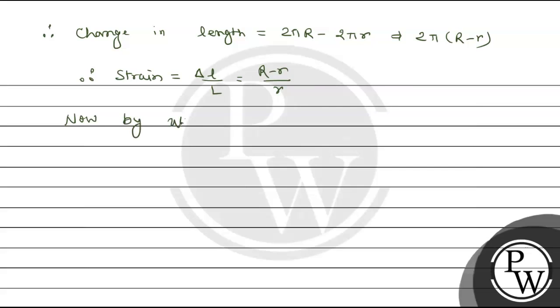Now by using formula F equals YA del L by L, F will be YA(R-r) upon r. So therefore tension in string is equal to AY(R-r) upon r.